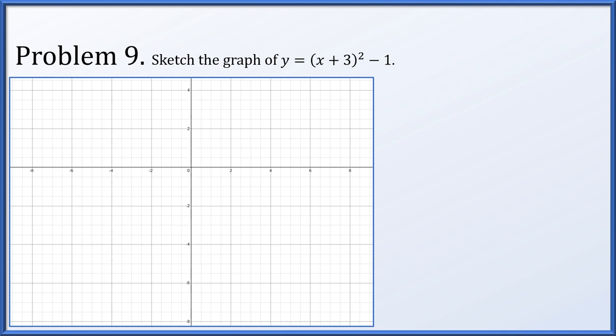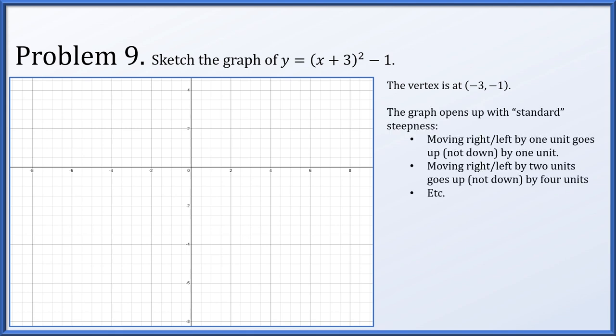Next, sketch the graph of y equals x plus 3 squared minus 1. The vertex is at negative 3 comma negative 1 — in vertex form x minus h squared plus k, h equals negative 3 and k equals negative 1. The leading coefficient is 1: standard parabola opening upward. Moving right or left by 1 unit goes up 1; moving 2 units goes up 4. We place the vertex at negative 3 comma negative 1 and join the points to get our parabola.